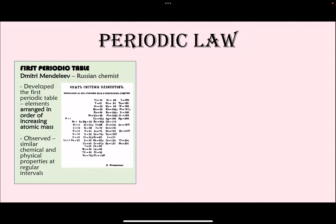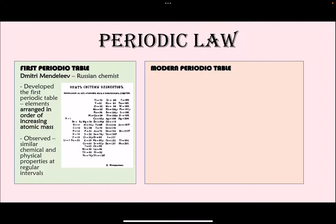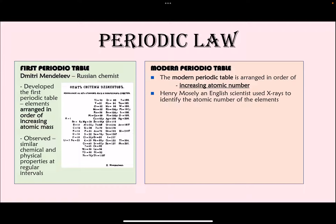Mendeleev observed that there were similar chemical and physical properties for elements at regular intervals, and this was used as the foundation for the modern periodic table. The most important thing to remember about the modern periodic table is that it is arranged based on increasing atomic number, not atomic mass. Please do not get this question wrong — there is a very high chance this question will show up on your exam.